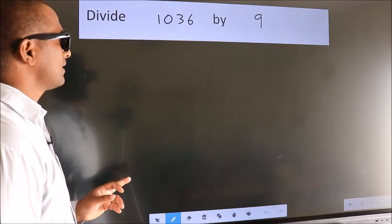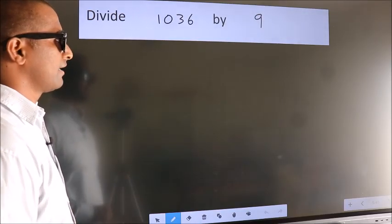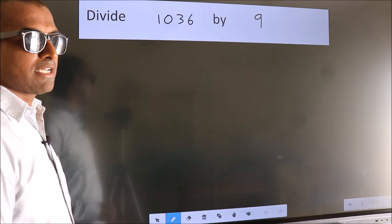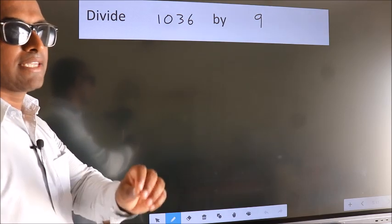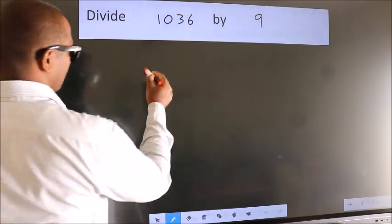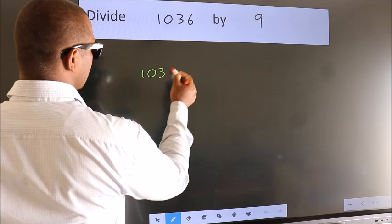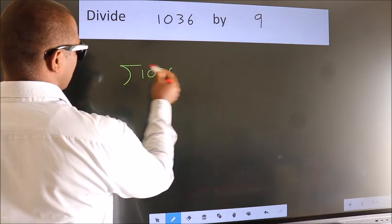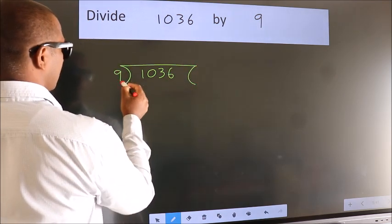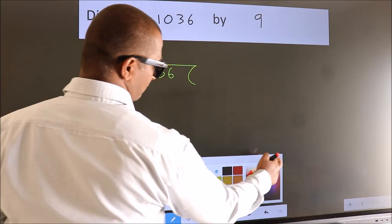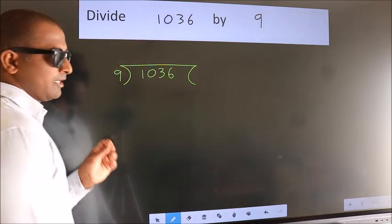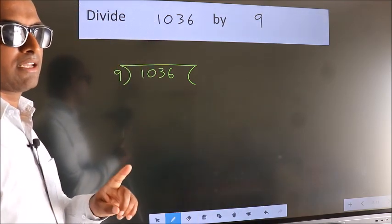Divide 1036 by 9. To do this division, we should frame it in this way: 1036 here, 9 here. This is your step 1. Next,